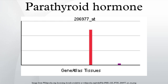Hypermagnesemia inhibits PTH secretion and also causes resistance to PTH, leading to a form of hypoparathyroidism that is reversible. Hypomagnesemia also results in inhibition of PTH secretion. Stimulators: decreased serum Ca2+, mild decreases in serum Mg2+, an increase in serum phosphate — cells do not sense calcium phosphate directly — triggering an increase in PTH.